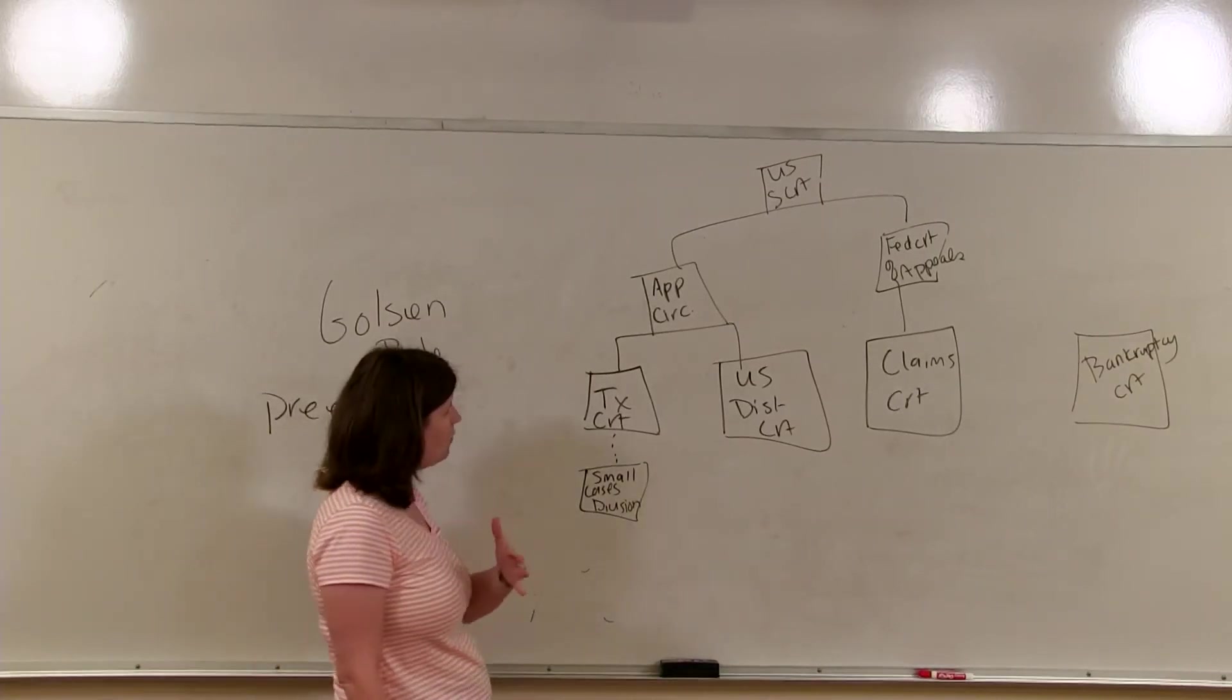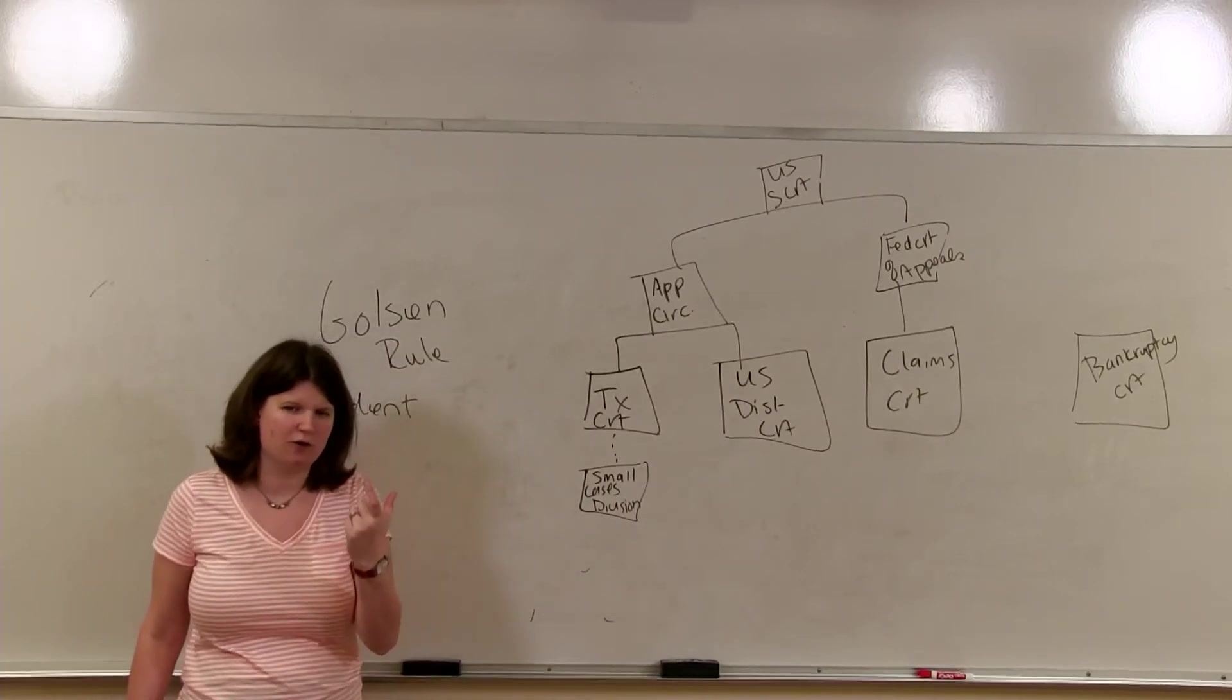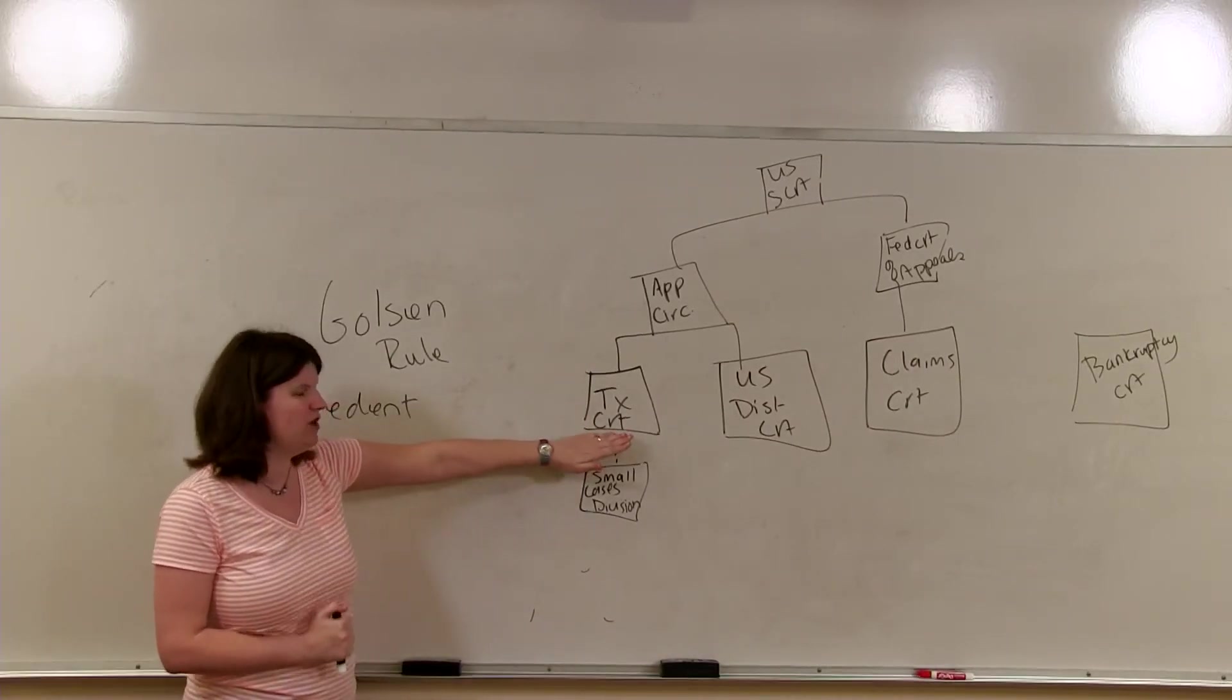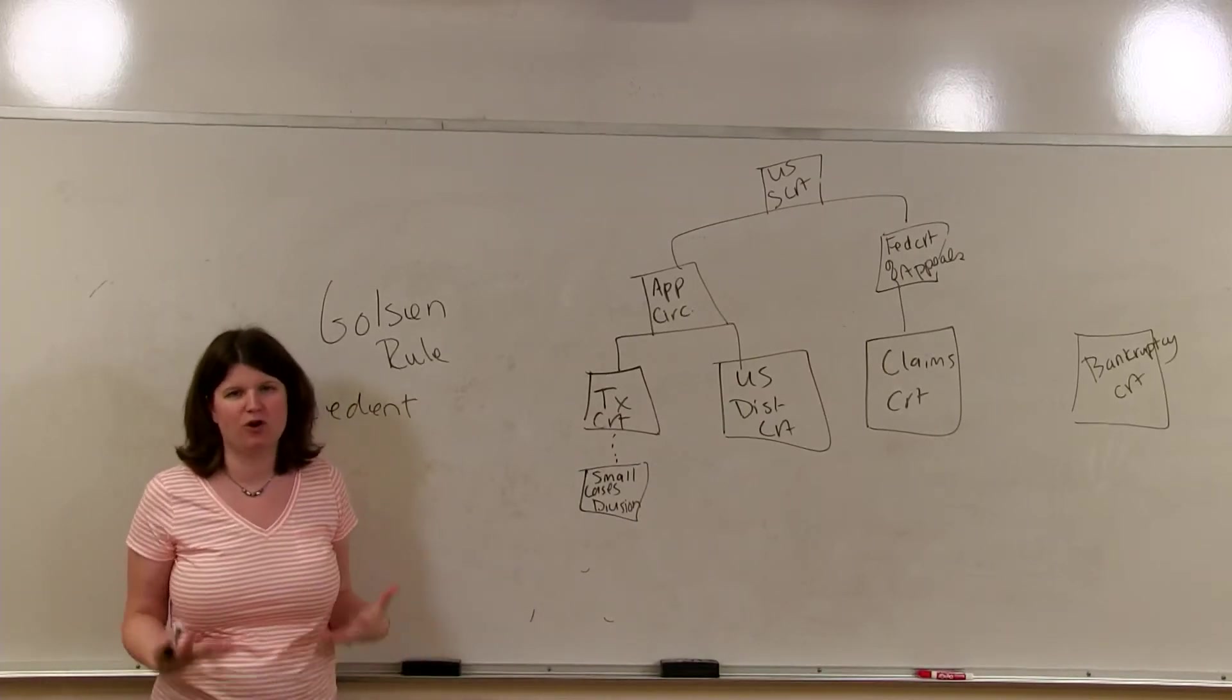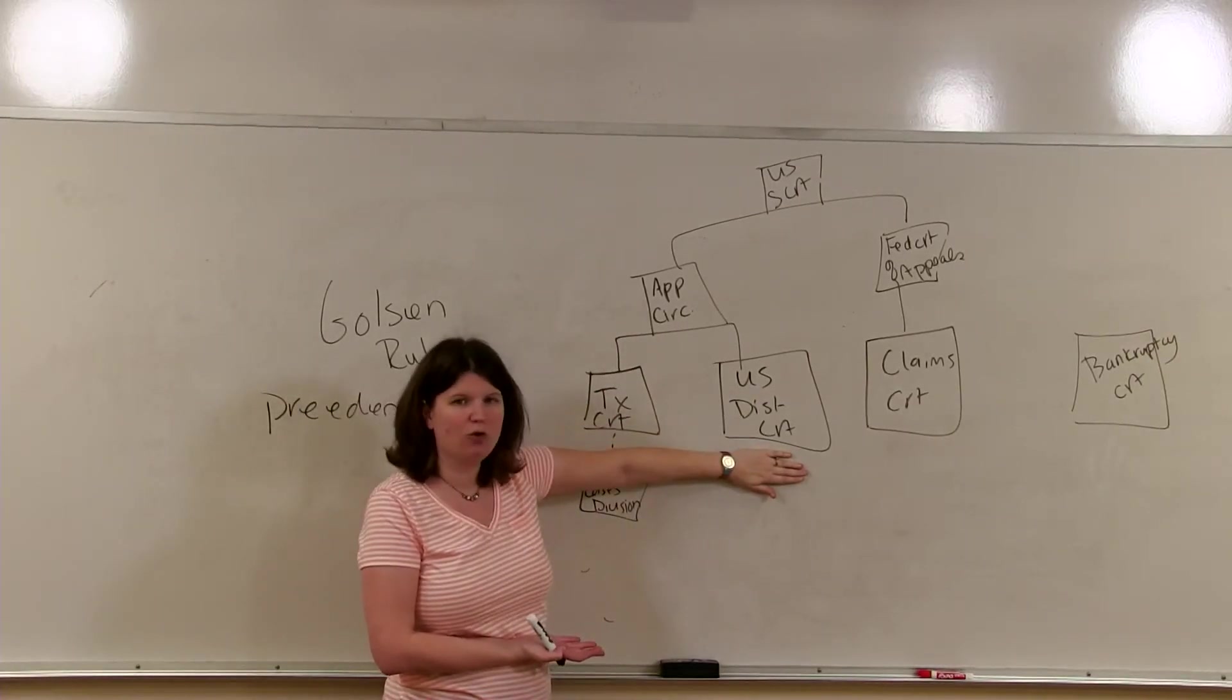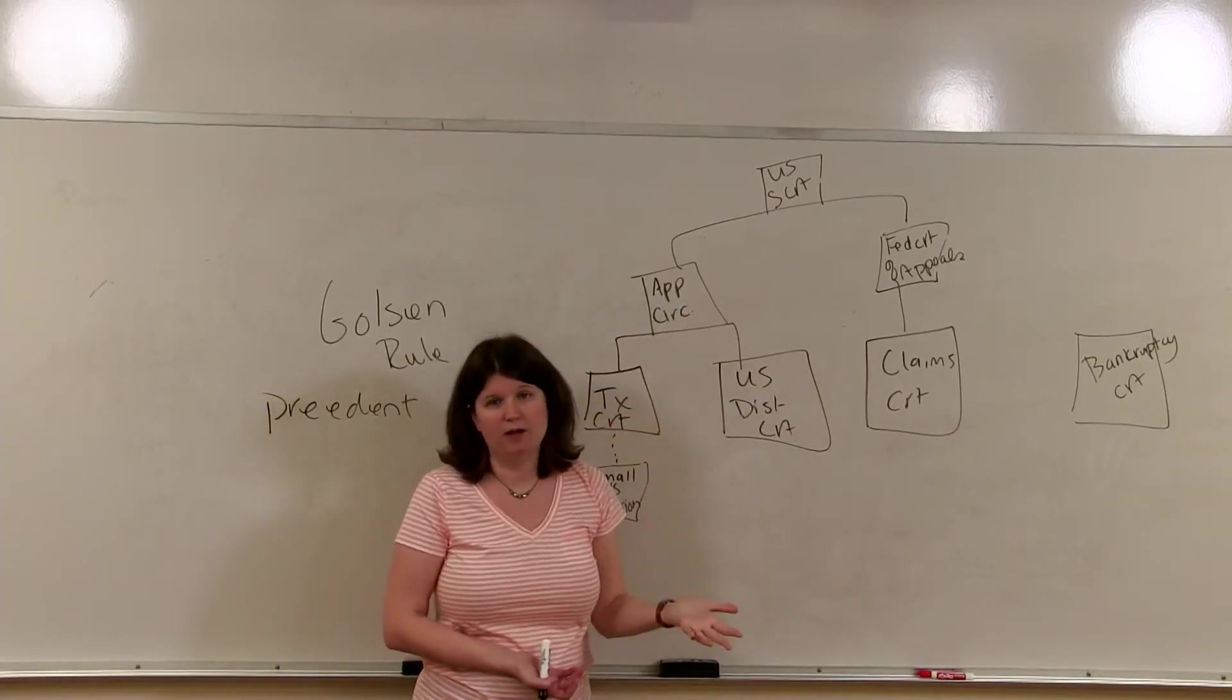So, there's an example given in the book. I can't remember what number it is, but we have two taxpayers. One is in the Tenth Circuit. One is in the Fifth Circuit. They both file in tax court. The Tenth Circuit and the Fifth Circuit have opposing views on this matter. The appellate court in the Fifth Circuit has ruled one way and the appellate court in the Tenth Circuit has ruled the opposite. The same group of judges in the tax court has to find completely opposite for those two different taxpayers because of the circuit that they are located in. This has to do with precedent. The tax court is governed by the precedent in that taxpayer circuit. Similarly, the U.S. District Court is governed by the circuit that the taxpayer is in, which makes sense because the taxpayer would file in the Fifth Circuit District Court, which is appealable to the Fifth Circuit Appellate Court.